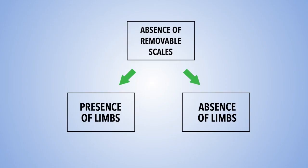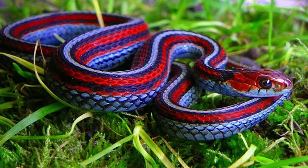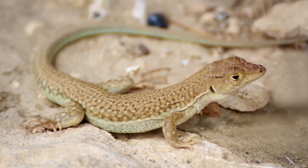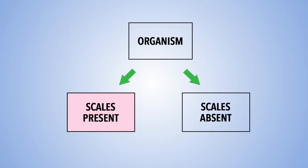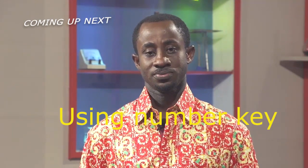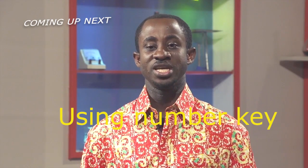For the remaining organisms under scales present, we use another differentiating factor: limbs absent versus limbs present. For limbs absent we have the snake, whilst for limbs present we have the lizard. Now try to put the organisms under scales present into groups. Now let's begin with the numbered key.